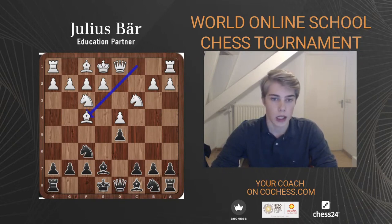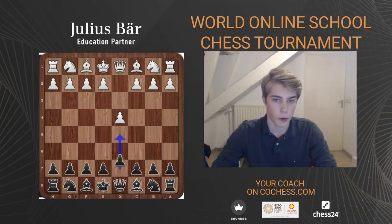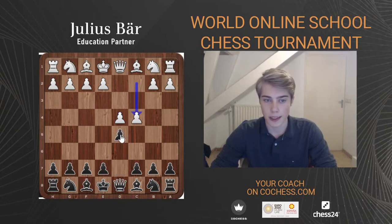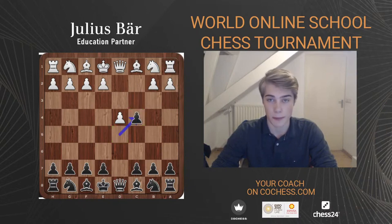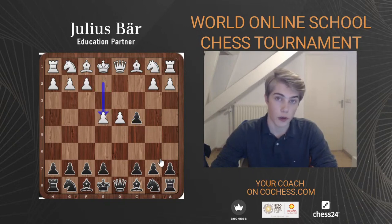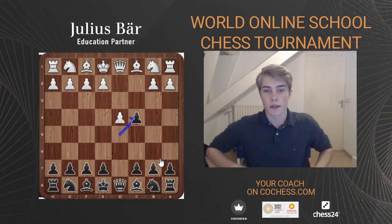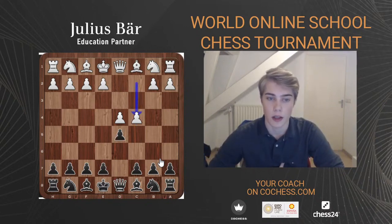Today we're talking about the Queen's Gambit Declined specifically, starting with d4, d5, c4. The move d takes c4 is called the Queen's Gambit Accepted — White will almost always get the pawn back, for example with e3 or e4 followed by Bc4. It's a very different opening, perfectly okay for Black objectively.